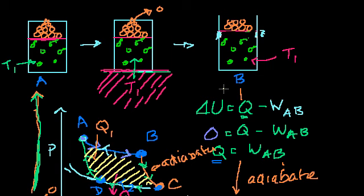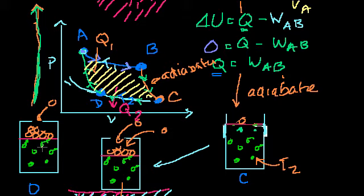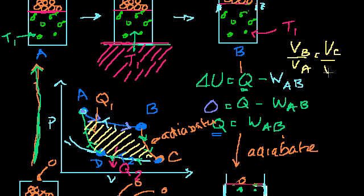The goal in this video is to prove a simple result: that the ratio between the volume at state B and the volume at state A, in our Carnot cycle, is equal to the ratio between the volume at state C and the volume at state D.